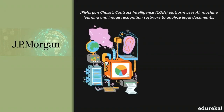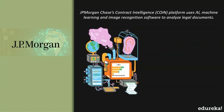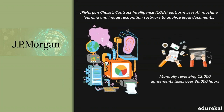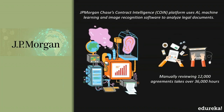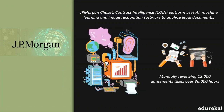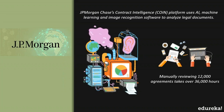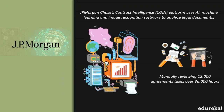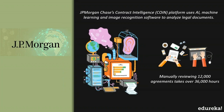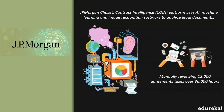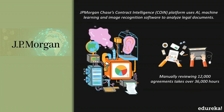In the finance sector, JP Morgan's Chase contract intelligence platform uses machine learning, artificial intelligence, and image recognition software to analyze legal documents. Manually reviewing around 12,000 agreements took over 36,000 hours, but as soon as this task was replaced by an AI machine, it was able to do this in a matter of seconds. Even though AI cannot think and reason like humans, because of machine learning algorithms, deep learning, and natural language processing, AI can compute the most complex problems in a matter of seconds.